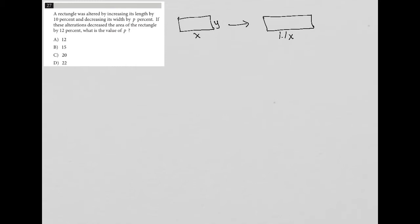And then the width was decreased by P%. So I'm going to just say Y, blank Y. So if P% were 5%, then that blank would be 0.95. I'm starting off with 100% of Y, then I'm subtracting 5%, or subtracting 5, so I'm left with 95%. So I understand that this value could be anything less than 100, basically. Less than 1 as a decimal.